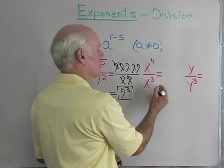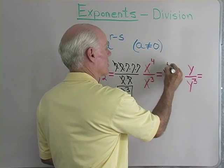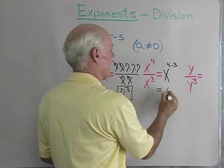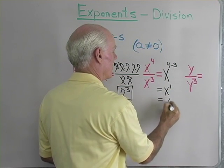All right, how about x to the 4th over x to the 3rd? That's going to be x to the 4 minus 3, which is x to the 1, which is x.